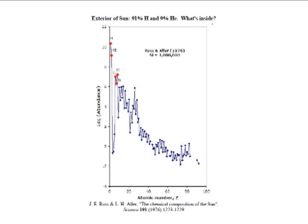This slide shows that the top of the Sun's atmosphere consists almost entirely of the lightest element, hydrogen, and the next lightest element, helium. The remaining 81 elements together make up less than 0.2% of the atoms at the top of the Sun's atmosphere. But what's inside?